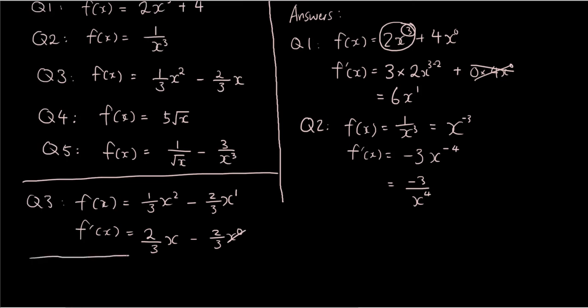Let's do question 4. f(x) is equal to 5 times square root of x. Now square root of x is the same thing as x to the power of a half using one of the index laws.